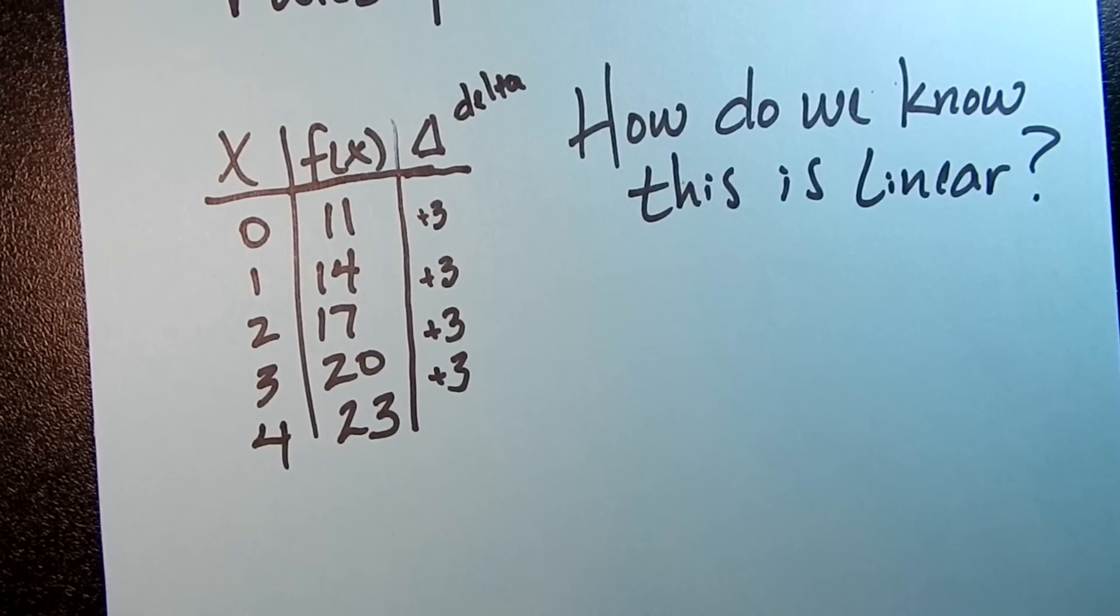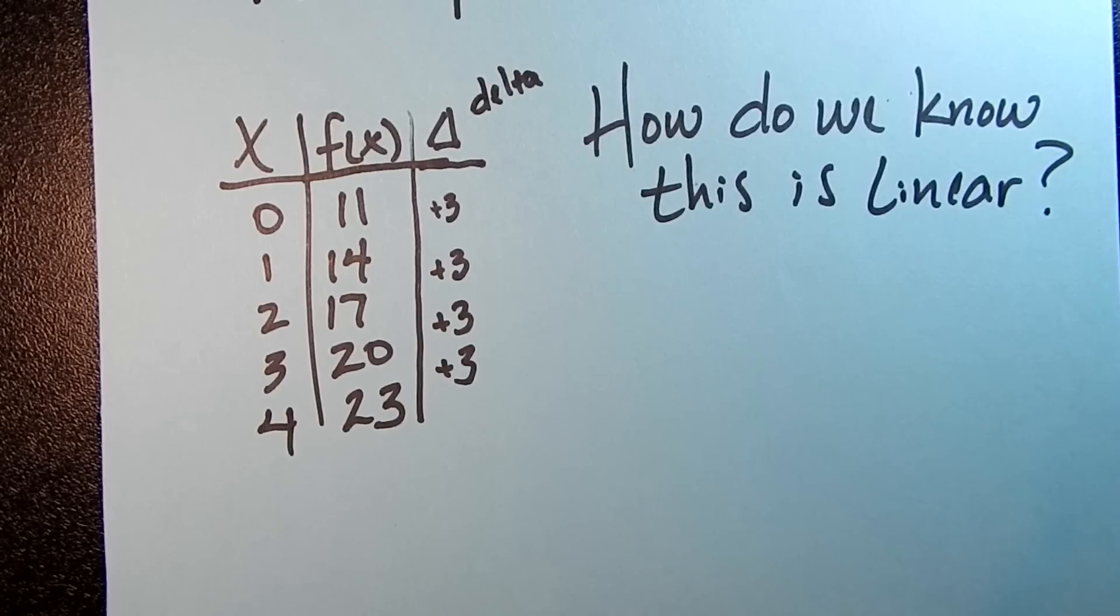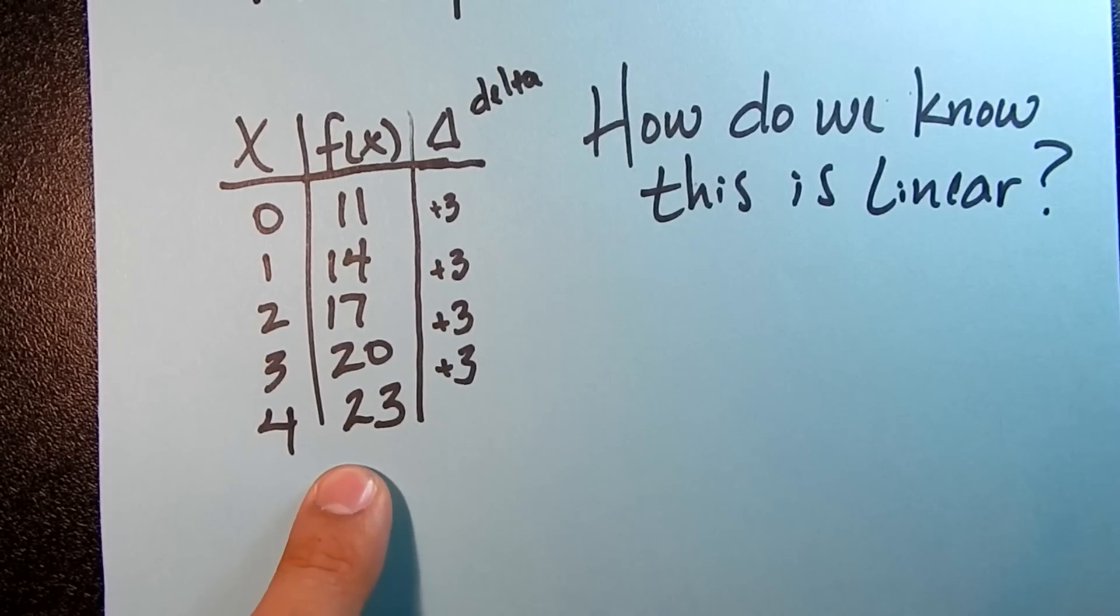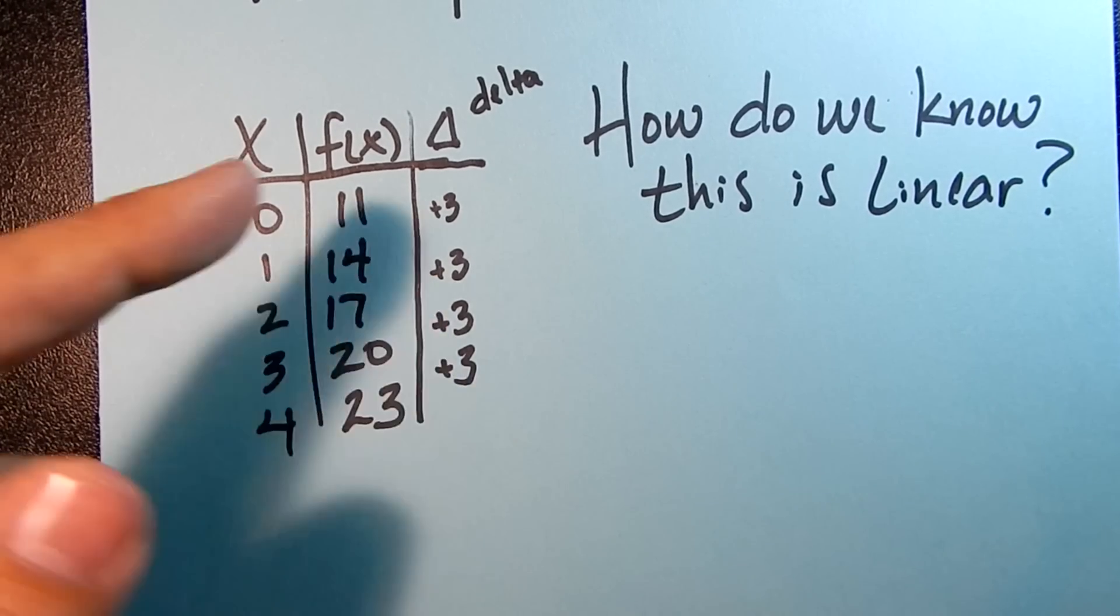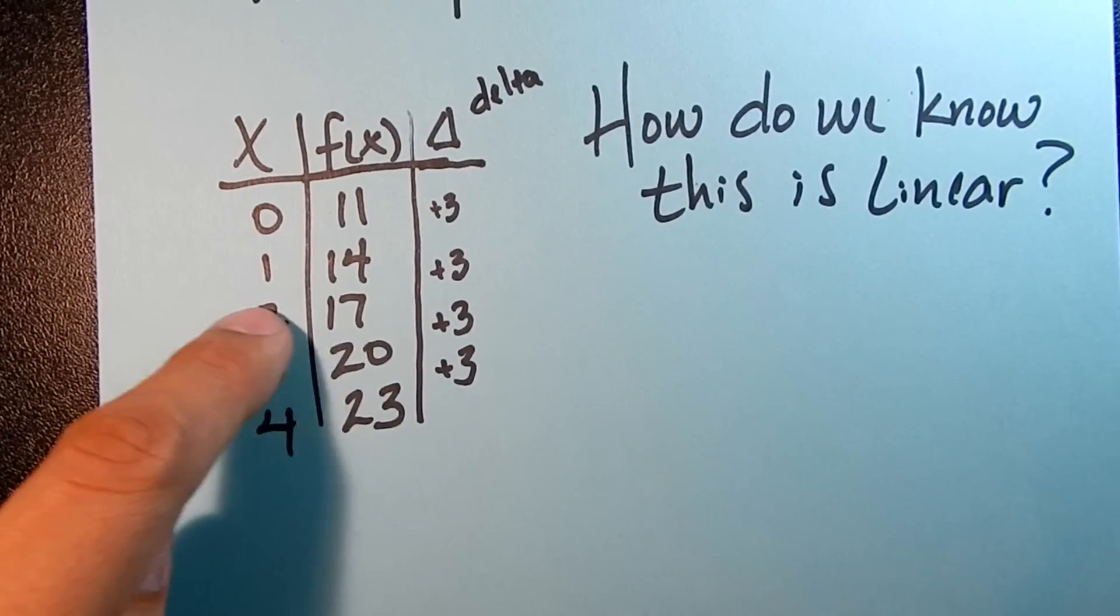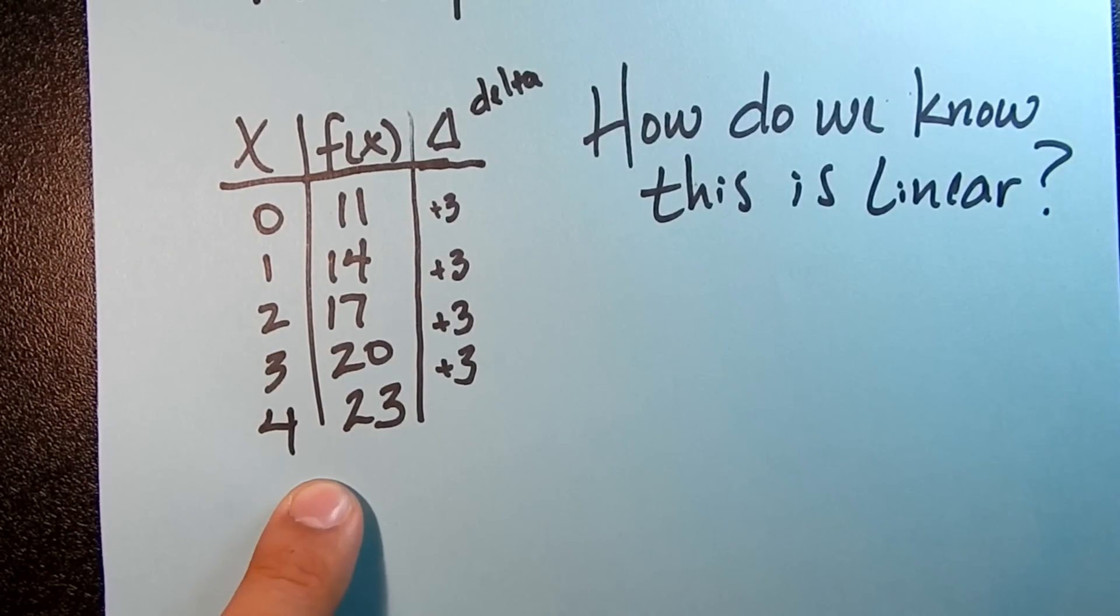Now, another way that we can tell if this function is linear, and this is a way that is perfectly fine to rely on, is just graph them. If we graph these two points, this is an x, this is a y, so I find the point 0, 11, and then the point 1, 14, and so on and so on. If I graph this, I can tell that this is a line as well.